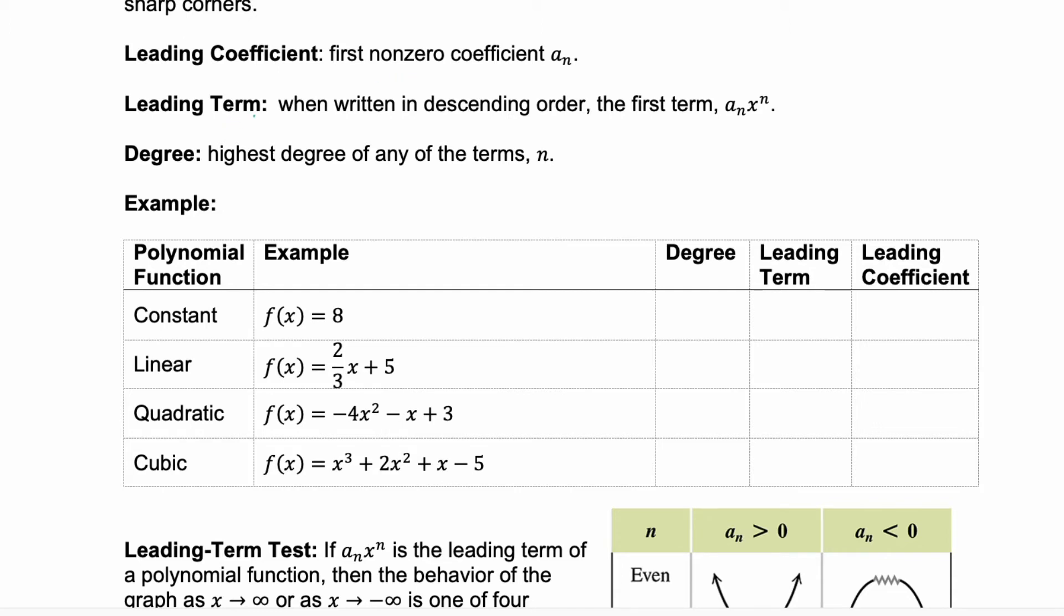The leading term is when you write your terms in descending order. It's the very first term that includes the leading coefficient, a_n, and the variable. The degree is the highest degree of any of the terms, n.